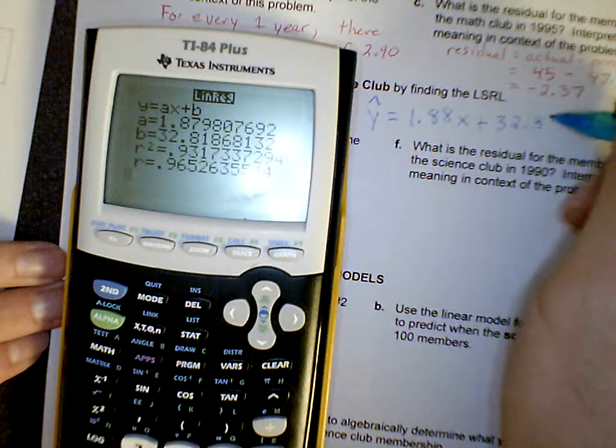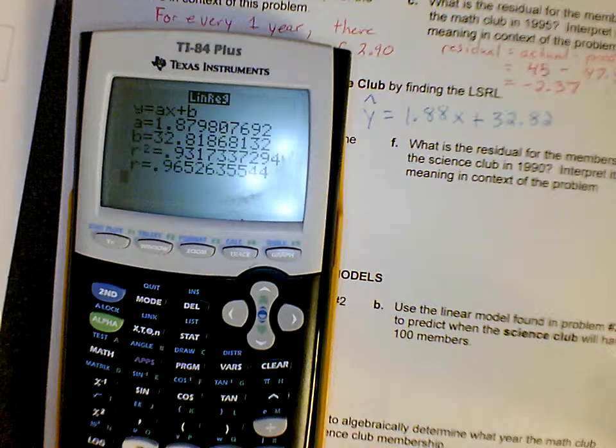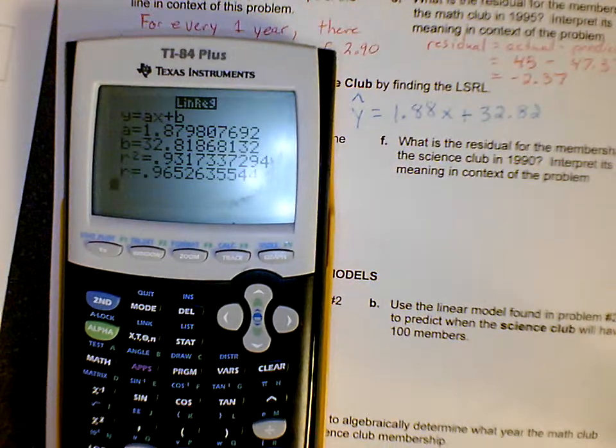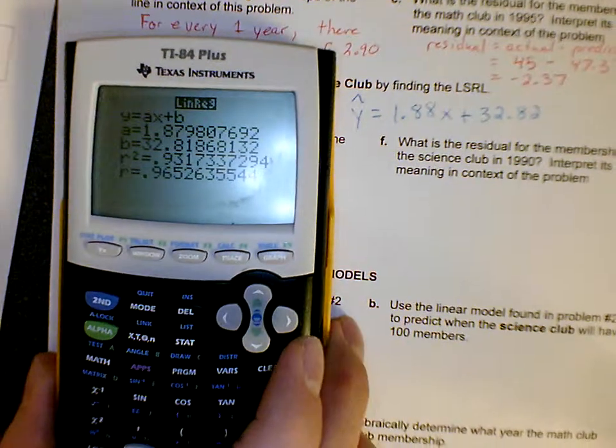which is 32.82. Okay, make sure you're rounding to two decimal places correctly. And there is our LSRL for the science club.